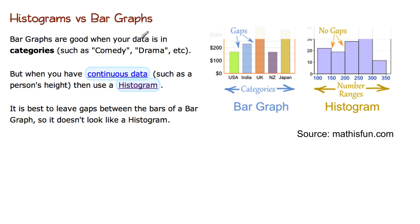Bar graphs are good when your data is in categories, such as comedy, drama, etc. When you have continuous data, such as a person's height, use a histogram. With a bar graph, it's best to leave gaps between the bars so it doesn't look like a histogram. Here's your bar graph — we're dealing with categories here. When you're dealing with continuous information like number ranges, the data continues, so that's why you don't leave a gap. That's the difference between a bar graph and a histogram.